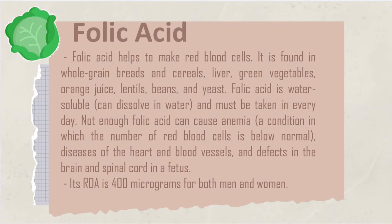Next is folic acid. Folic acid helps to make red blood cells. It is found in whole grain breads and cereals, liver, green vegetables, orange juice, lentils, beans, and yeast. Folic acid is water-soluble and must be taken in every day. Not enough folic acid can cause anemia, diseases of the heart and blood vessels, and defects in the brain and spinal cord in a fetus. Its RDA is 400 micrograms for both men and women.